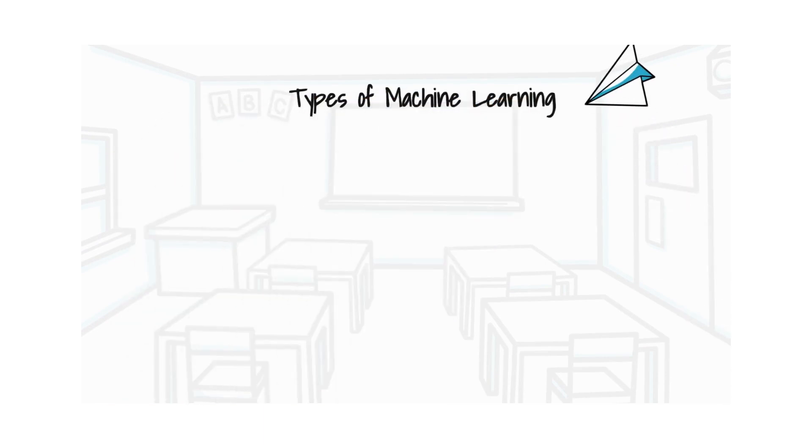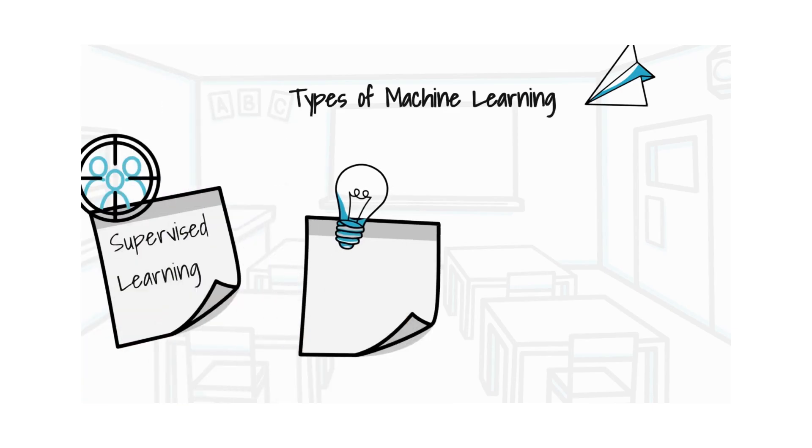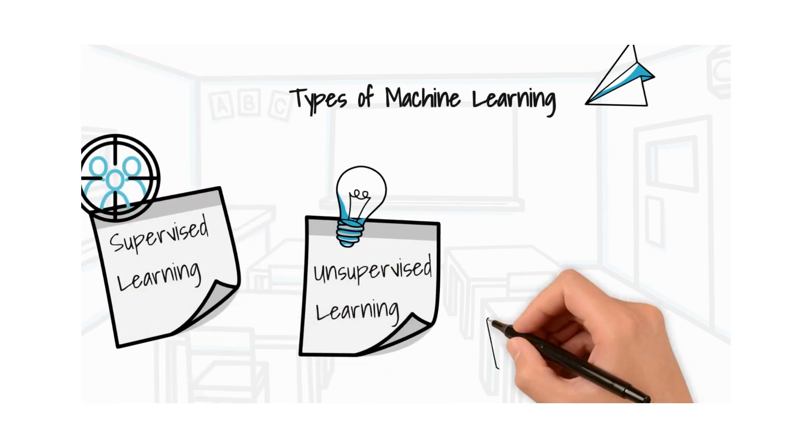Types of machine learning techniques: there are primarily three types of machine learning - supervised, unsupervised, and reinforcement learning.